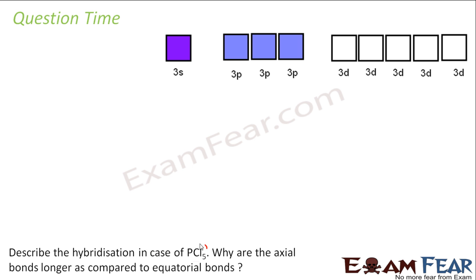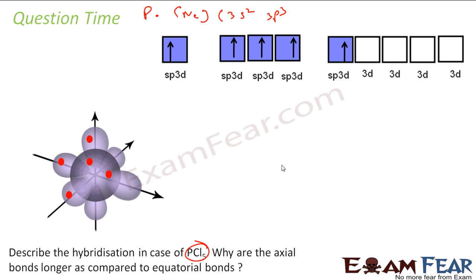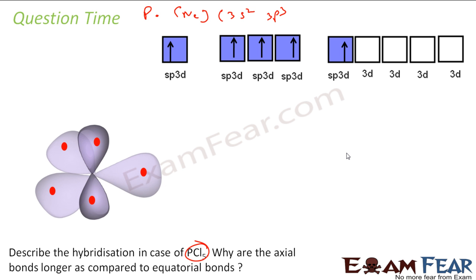Let us try hybridization in case of PCl5. So let us do this PCl5. Phosphorus will have Ne 3s2 3p3. Since the d orbitals are also involved in this, we have drawn this d orbitals line. This is my phosphorus. So 3s2 and 3p3 electrons there. One electron moves from here to here 3d, forms sp3d hybridization. So we have 5 different orbitals, same energy, and each will get 1. This is my phosphorus.